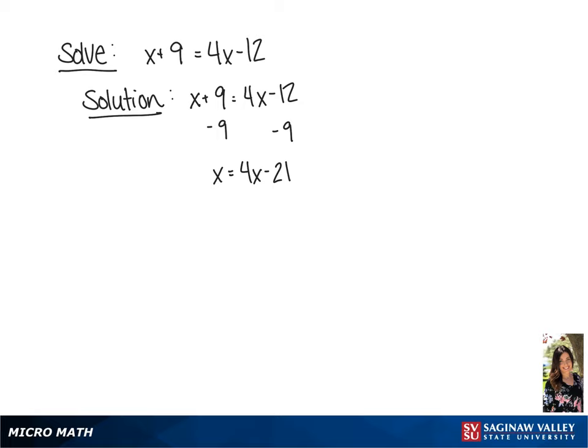Next, we're going to subtract 4x from each side. This gives us negative 3x equals negative 21.